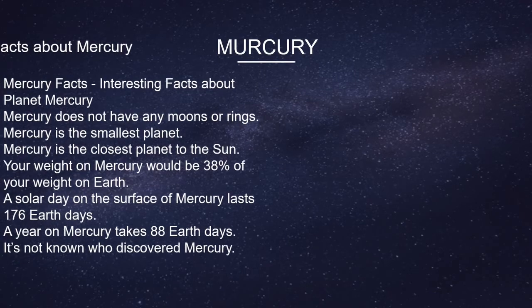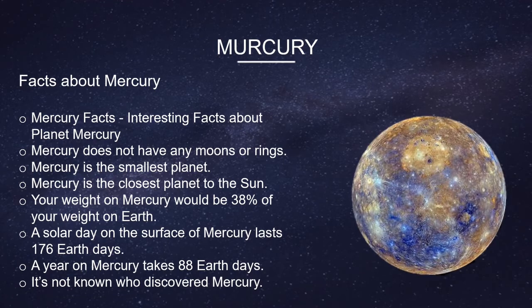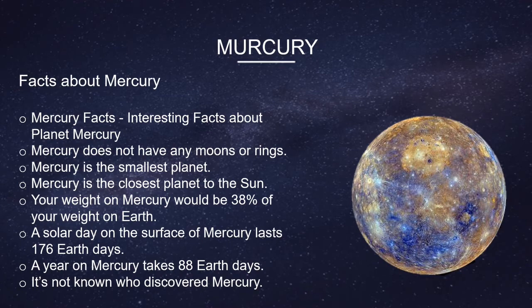Mercury. Facts about Mercury: Mercury does not have any moons or rings. Mercury is the smallest planet. Mercury is the closest planet to the Sun. Your weight on Mercury would be 38% of your weight on Earth. A solar day on the surface of Mercury lasts 176 Earth days. A year on Mercury takes 88 Earth days. It is not known who discovered Mercury.